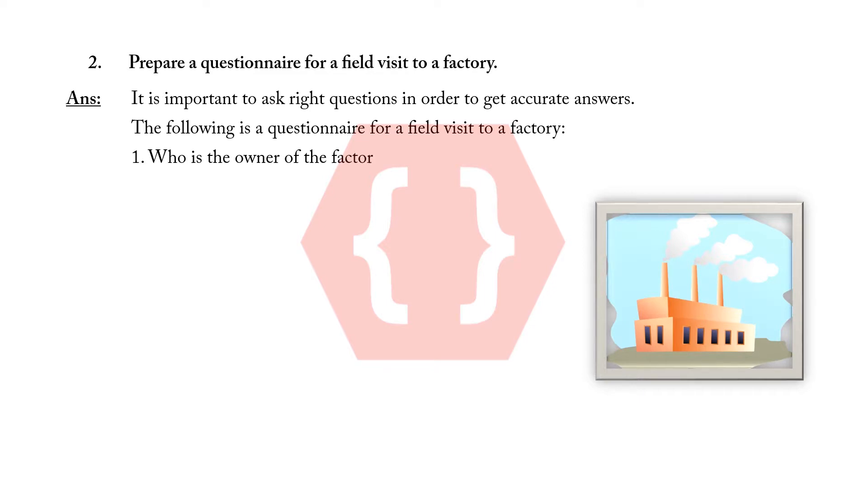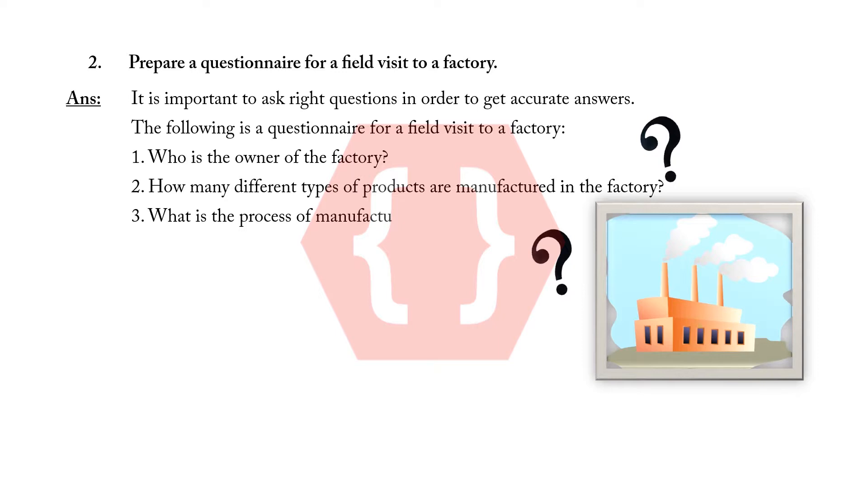the owner of the factory? Two: How many different types of products are manufactured in the factory? Three: What is the process of manufacturing? Four: What is the source of raw material? Five: What is the employment count of the